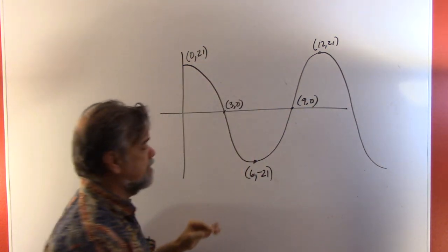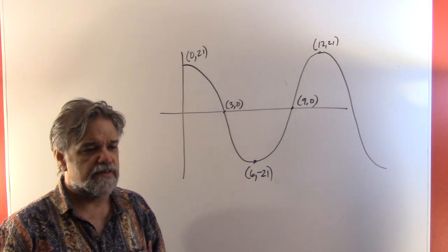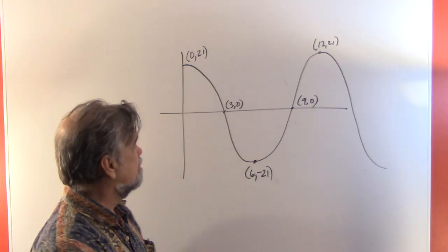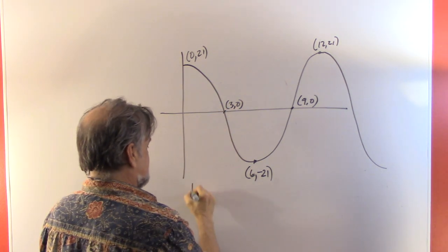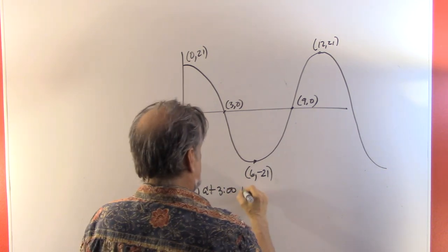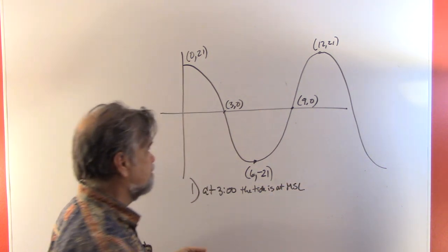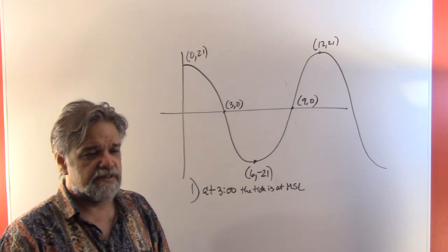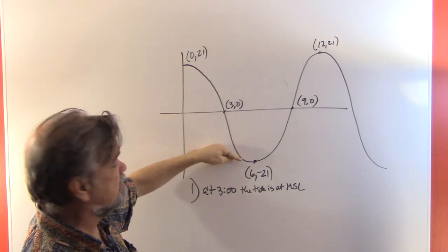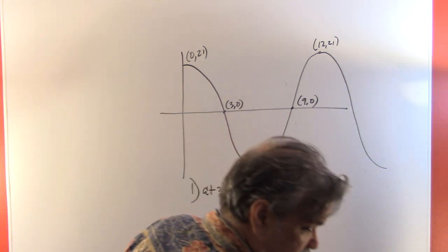The pattern repeats continuously. At three o'clock, that's t = 3, which is right on the midline — so the tide is at mean sea level. At 5:30 p.m., t = 5.5, which is just before the low at t = 6, so the tide will be very, very low. We need an equation to find the exact values.